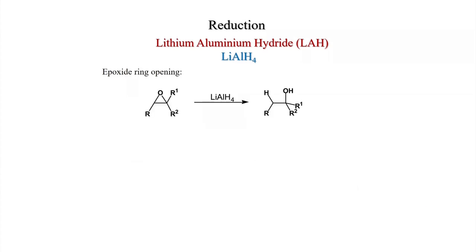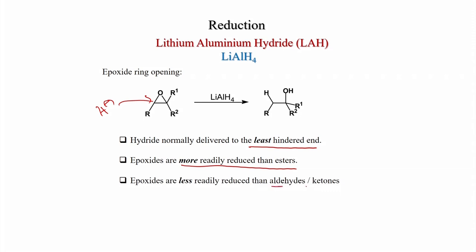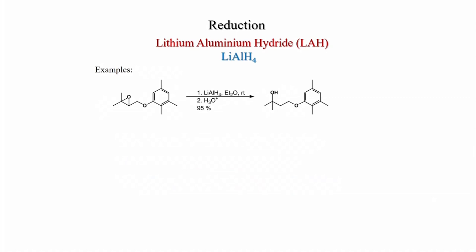Epoxide ring opening is an important reaction: regioselectivity is at the least hindered end. Epoxides are more readily reduced than esters; if both are present, the epoxide reduces faster. However, if an aldehyde or ketone and an epoxide are both present, reduction occurs preferentially at the aldehyde/ketone since epoxides are less readily reduced than carbonyls.